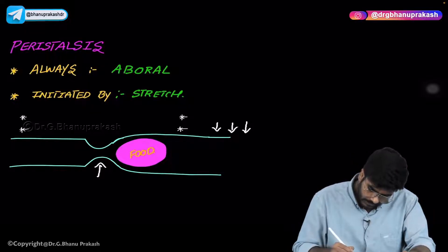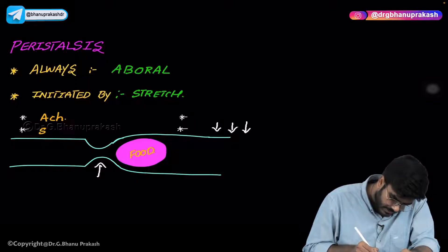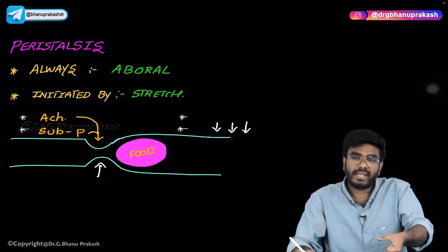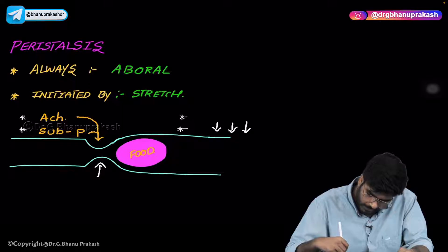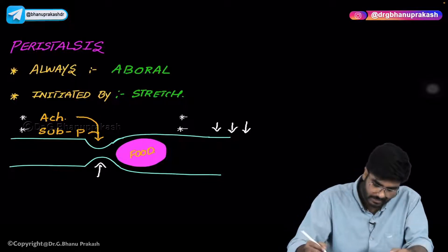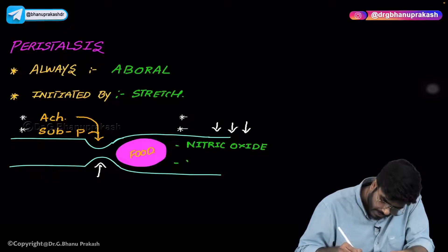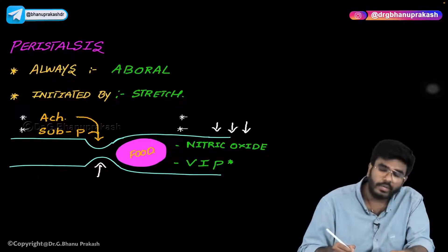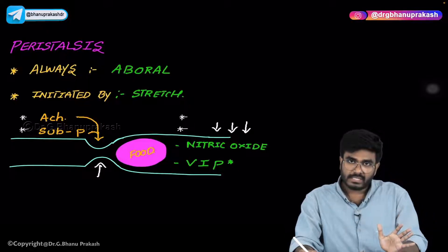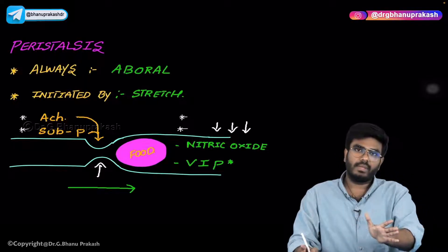The neurotransmitters involved in peristalsis: the proximal segment contracts due to acetylcholine and Substance P, which act on the proximal area causing contraction. The distal segment dilates to receive food, and this dilation is controlled by nitric oxide and vasoactive intestinal peptide (VIP). Because of peristalsis, the important outcome is propulsion — movement of food in an antegrade direction.